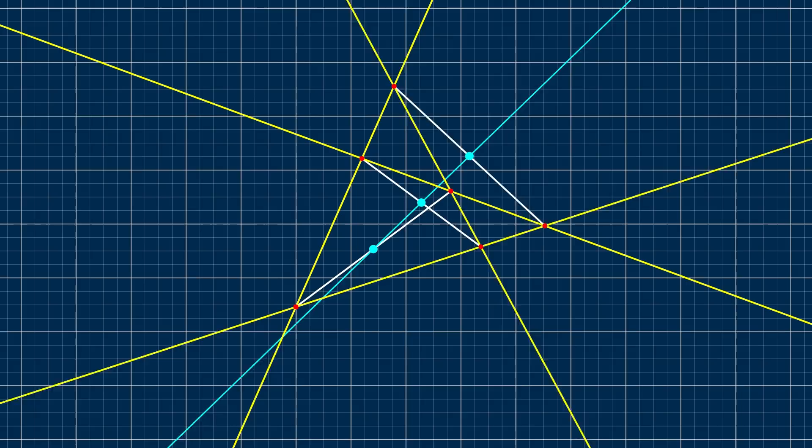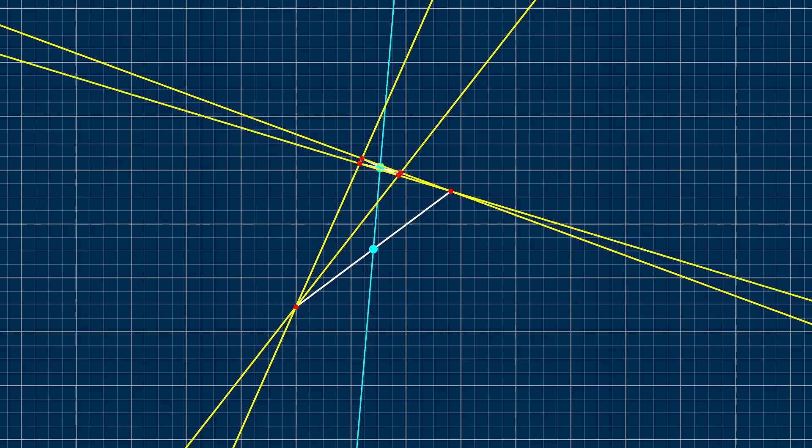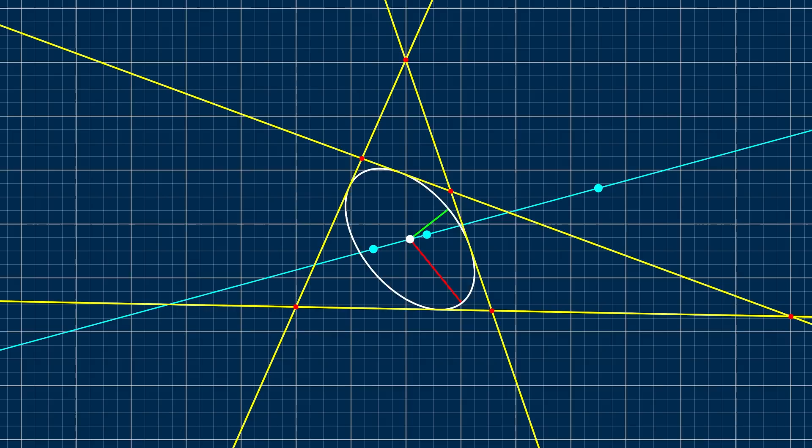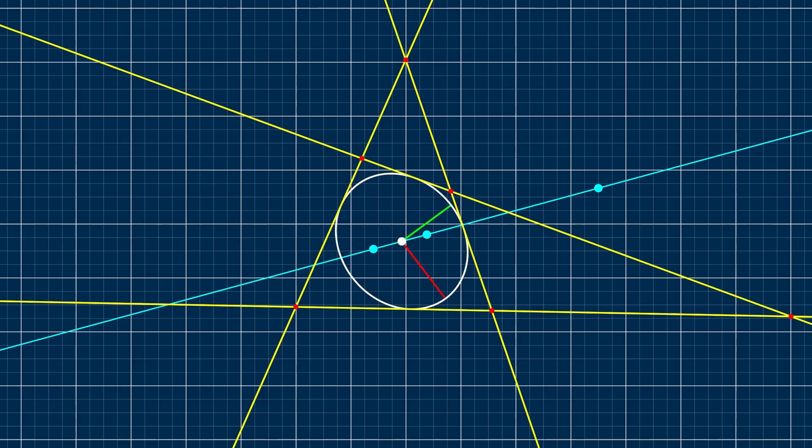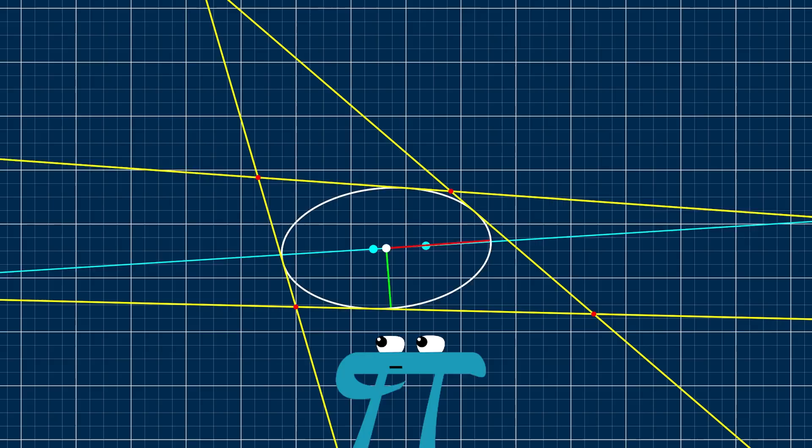But it gets even weirder. I started thinking, the centers of these ellipses happen to lie on a line. Maybe that's not a coincidence. And it's not. The center of every solution lies on this line. That's just crazy. And there's a beautiful mathematical proof that gives deep insight into this problem. Probably. I was never able to prove it.